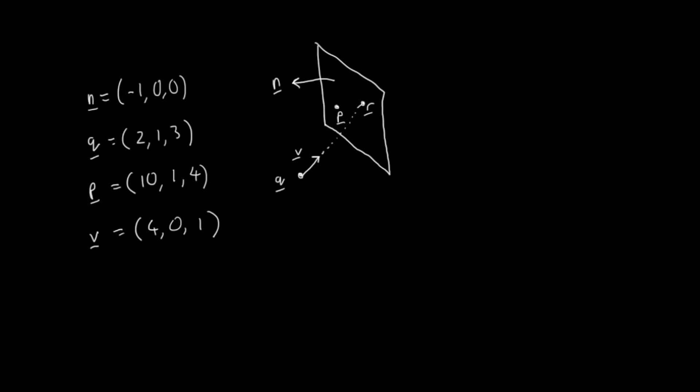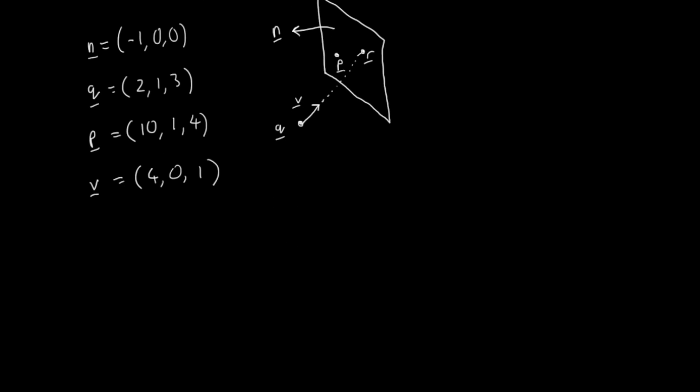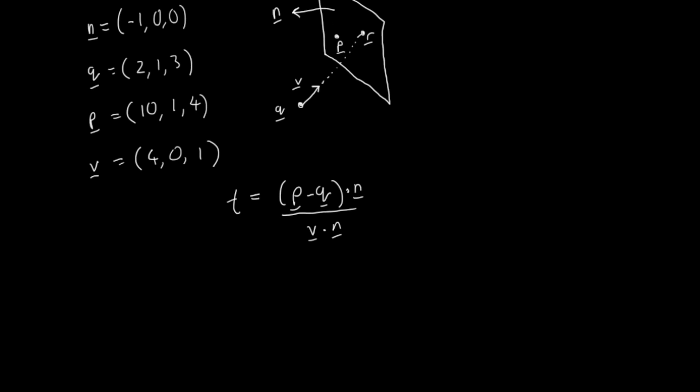Now if I just scroll up a bit. Earlier we derived that expression for T. So here T equals P minus Q dot N. This is up here. P minus Q dot N divided by V dot N. So I'm running out of screen space. So we have T, if I write that out again, is equal to P minus Q dot N over V dot N. So all I have to do now is substitute in those vectors, which I've got defined there, into this expression.